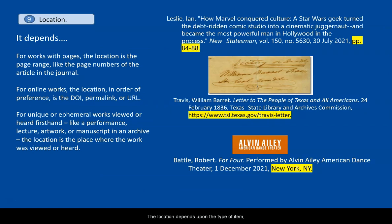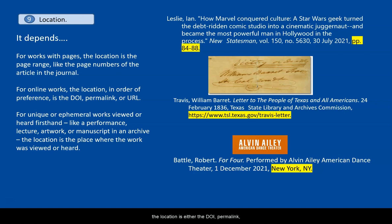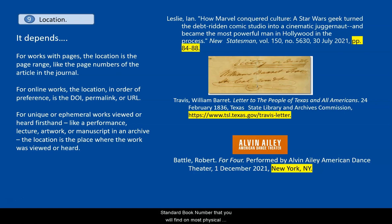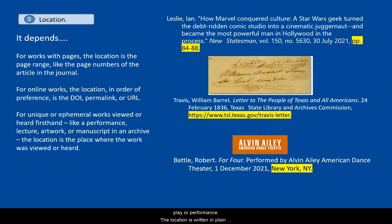The location depends upon the type of item. For an item with pages, the location is the page range, like the page numbers of the article in the journal. For online works, the location is either the DOI, permalink, or URL. The DOI is a unique number assigned to a digital item — DOI stands for Digital Object Identifier and is similar to an ISBN or International Standard Book Number found on most physical books. The permalink is a permanent link to a digital item provided by most subscription databases. The URL is the uniform resource locator or web address where you located the item. Or, the location could be as simple as where you saw a play or performance. The location is written in plain text and followed by a period — yes, even if it is a DOI, permalink, or URL.